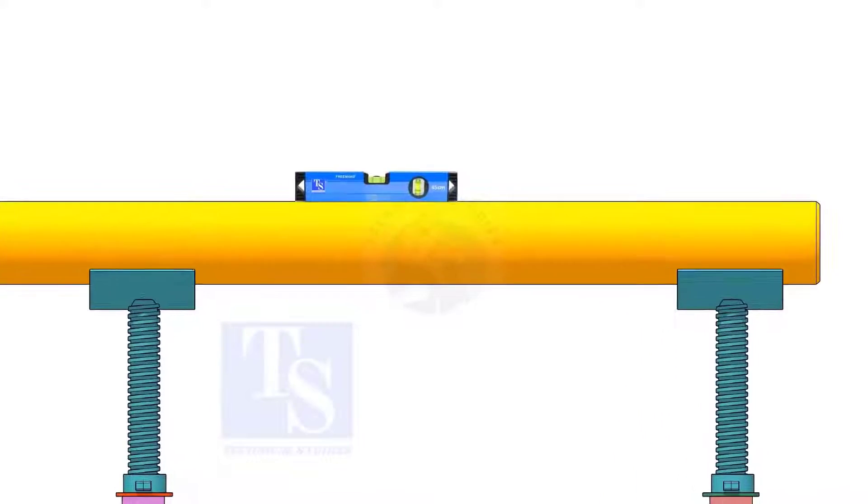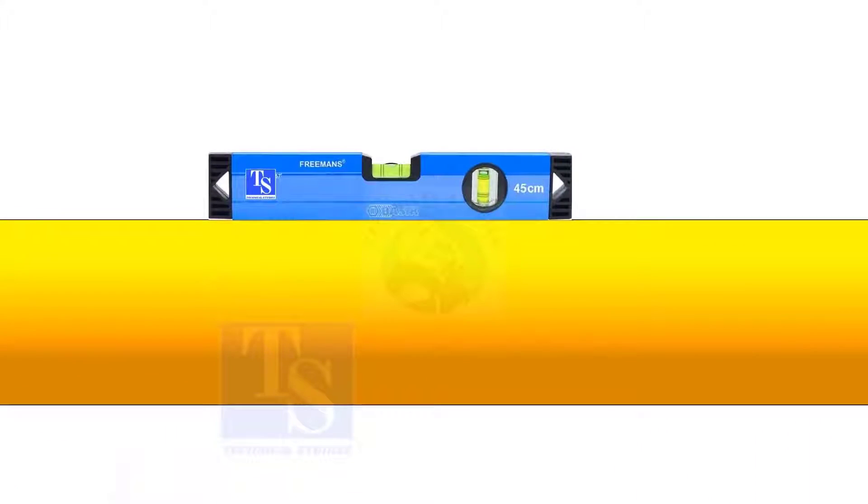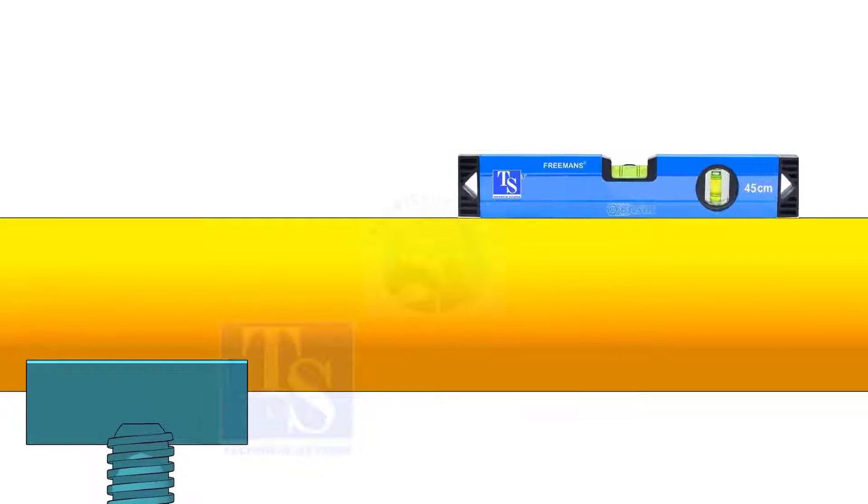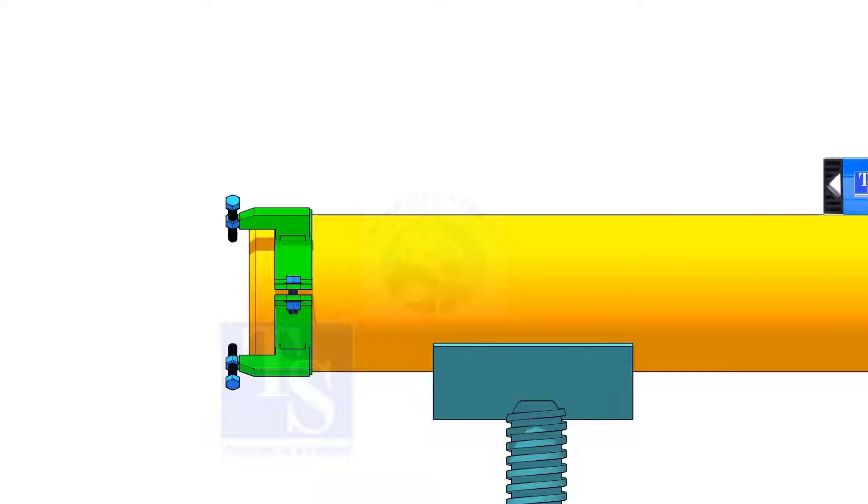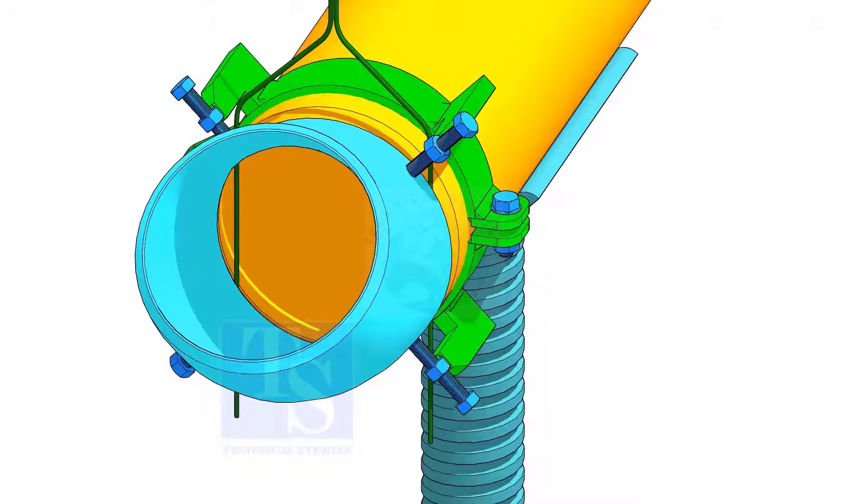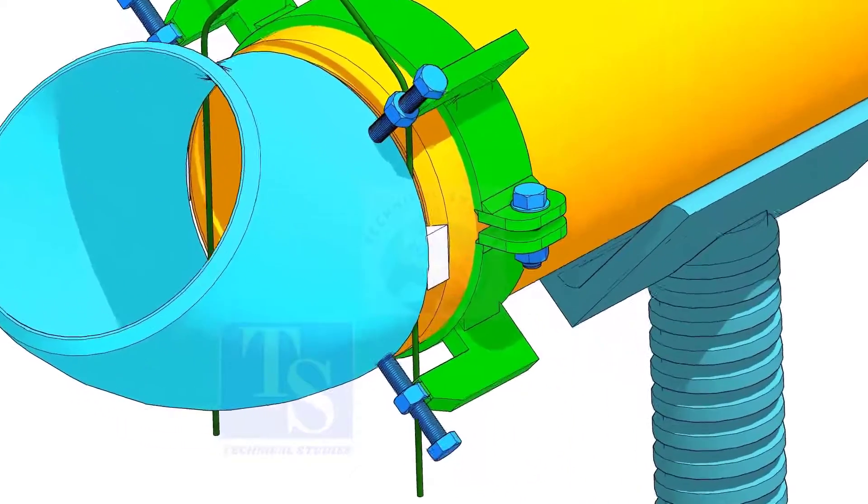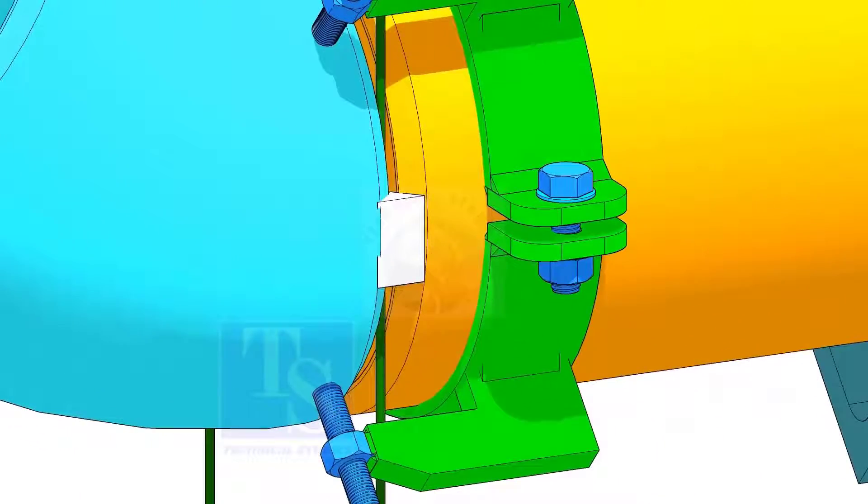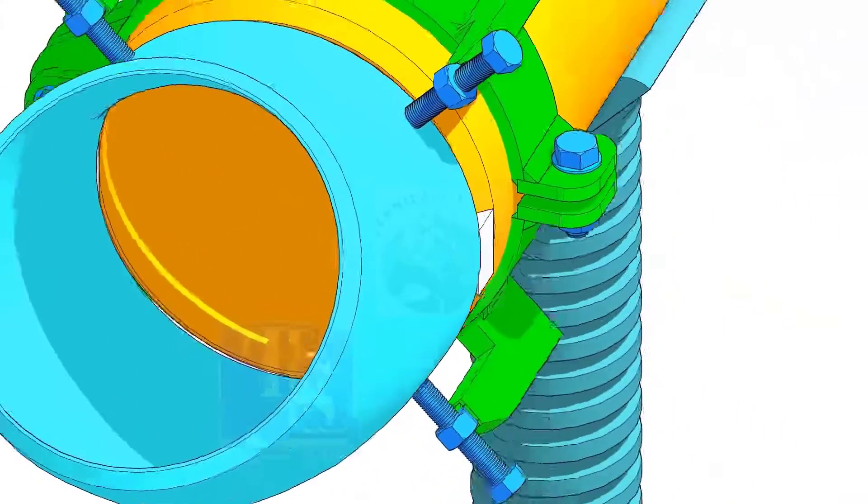This time, you need to level the pipe. After setting the gap and the overlap, tack weld on both sides of the joint.